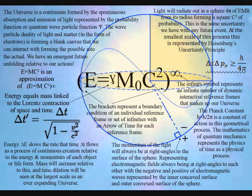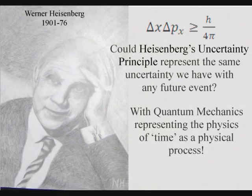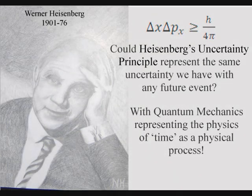At the smallest scale of the process, this is represented mathematically by Heisenberg's uncertainty principle.